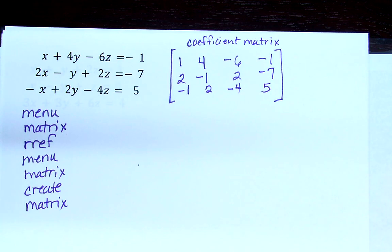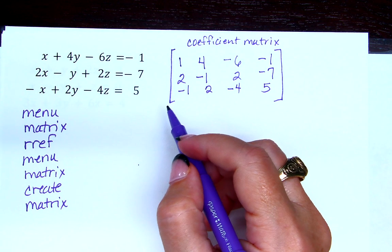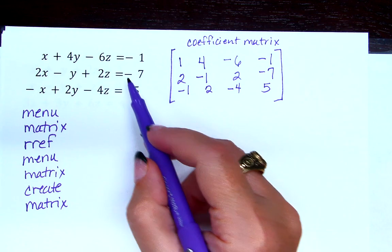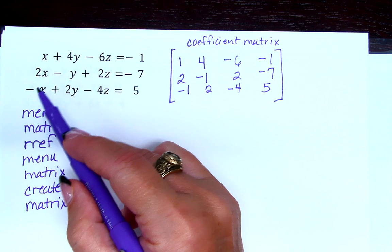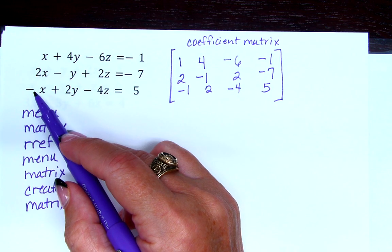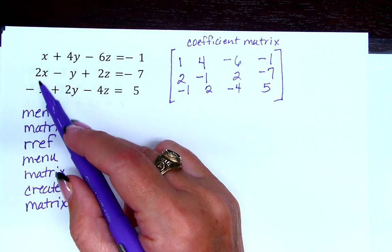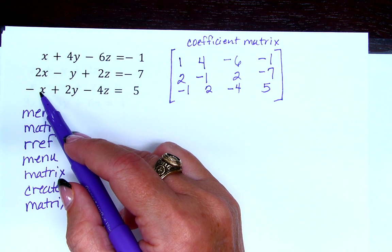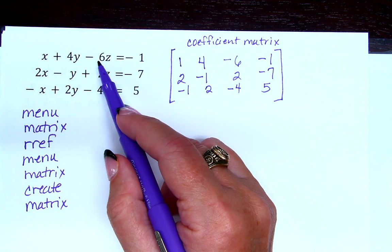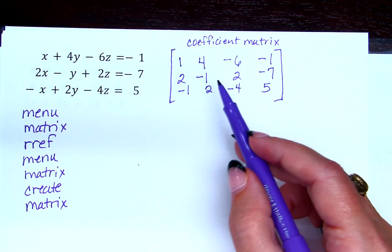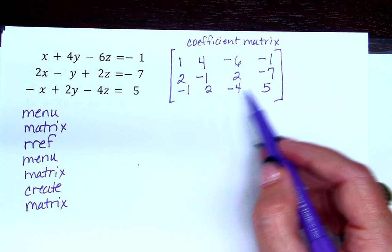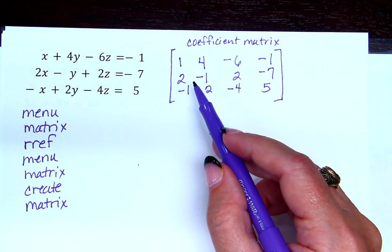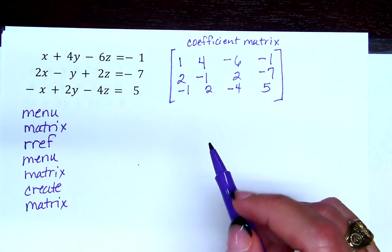Now, I didn't caution you at all about something, but you did it without me even having to tell you. So first of all, great job. What do you think I didn't have to caution you about? The signs. Right. You know enough that there's not just a 1 here in front of the x. You know it's a negative 1. You know that there's not just a 6 in front of the z. You know it's a negative 6. But I'll tell you, if you mess up here, almost always it's because of a sign. So be careful about that.